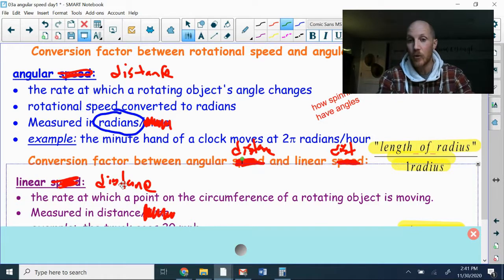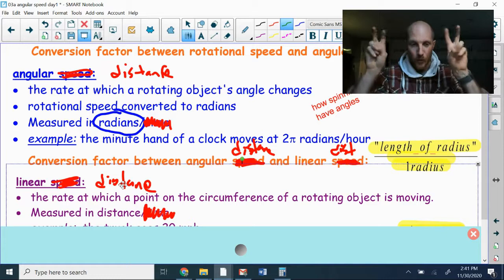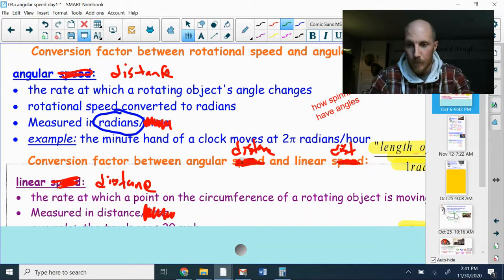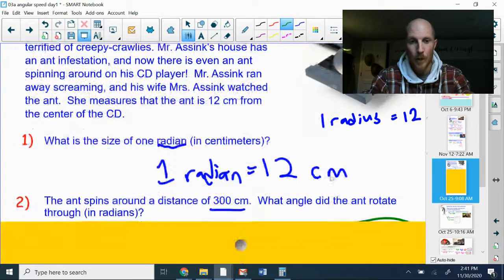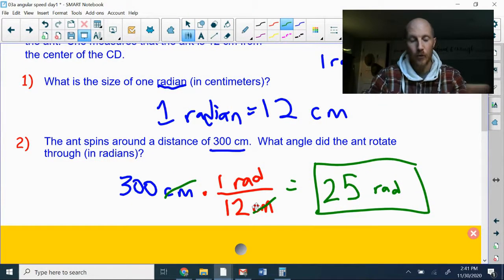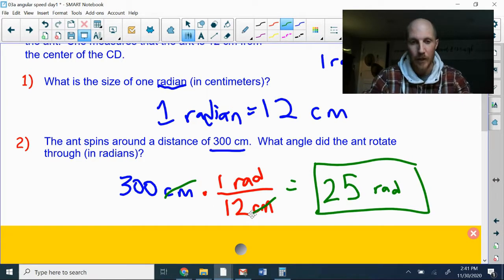So it's still going to be the length of the radius. I'm going to replace the word radius with the 12 centimeters for my radius. Right, you there? Okay, so that is my conversion factor: one radius is 12 centimeters. I want to make sure the centimeters cancel from the 300 centimeters and the 12 centimeters that is the size of one radian. Centimeters cancel, 300 divided by 12 gives me 25 radians.